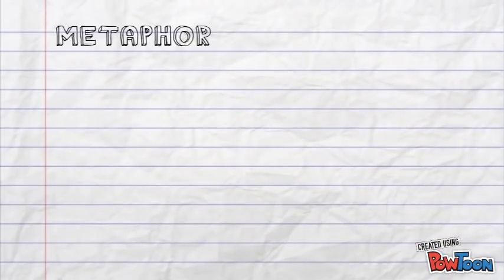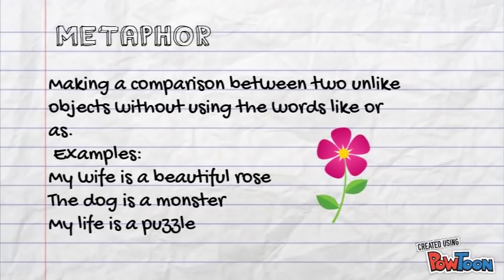Metaphors are like similes, except you're still making a comparison between two unlike objects, but now you are not using the words like or as. For example, my wife is a beautiful rose, my dog is a monster, and my life is a puzzle.